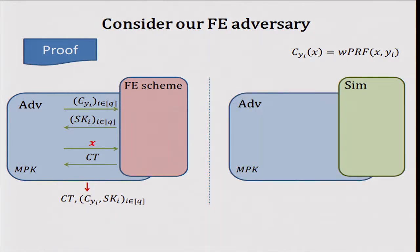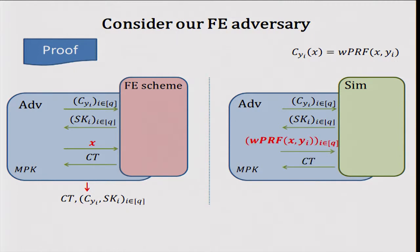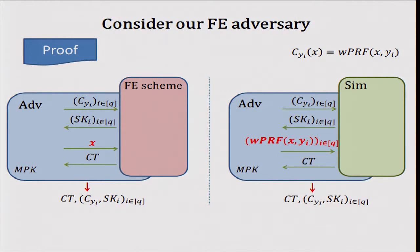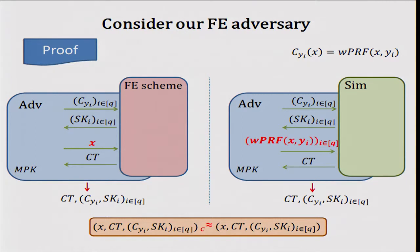We assume the functional encryption is secure, so therefore we have a simulator with the following interface. The simulator also gets all of the circuits defined by inputs y_i and gets corresponding secret keys. Later on, it gets these functions evaluated on the same key X and different inputs y_i, and comes up with the corresponding ciphertext. Because this is a secure scheme, the two distributions are indistinguishable.